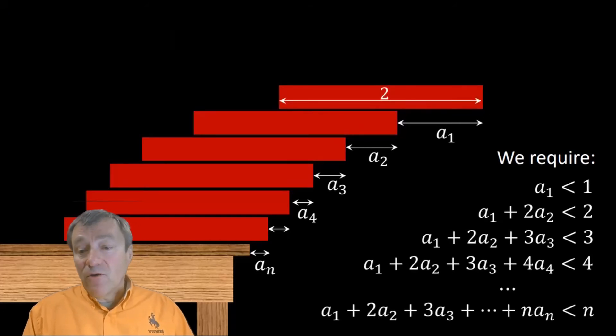Keep going that way. If you want to stack n bricks, then you have n possible points where the bricks can start to lean over. And to prevent that, you impose n conditions. There are n inequalities, shown on the right-hand side. Those are the requirements.